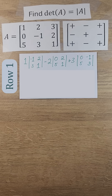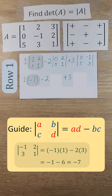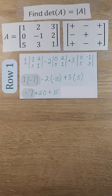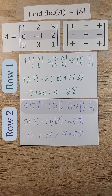We then bring down our constants and calculate the determinants of these 2x2 matrices. We simplify and get a final value of 28. Taking the determinant of this 3x3 matrix using row 1 gives us a value of 28.